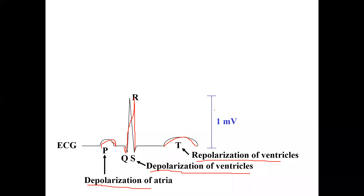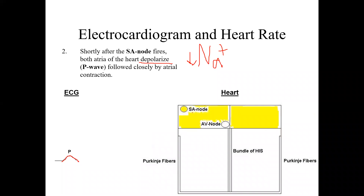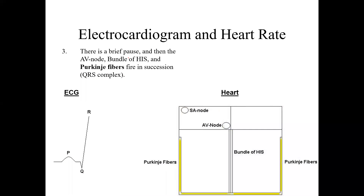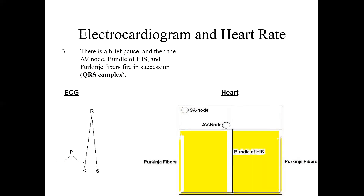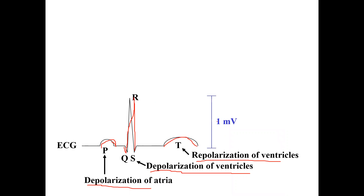I'll repeat this again. The SA node is the first part of the heart to show electrical activity. When the SA node activates — you can see the yellow thing in the picture — you get the P-wave. Then there is a brief pause, and then the AV node, bundle of His, and Purkinje fibers — when these three start firing together in succession — there will be QRS complex. Next, you have T-wave formation when the ventricles repolarize. So in a nutshell: P, QRS, and T.